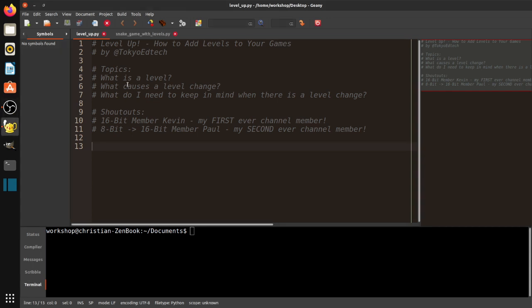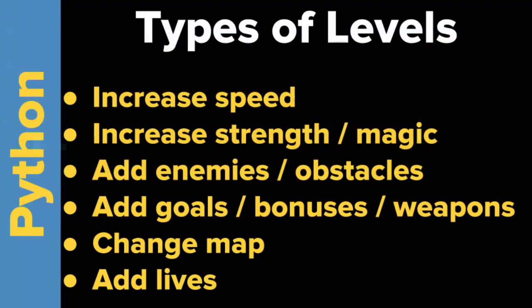People often ask me on my channel how to add levels, and I think the first question they have to answer for themselves is: what do you mean by a level? Here are some different level types. For example, in a level you might increase the speed of your player, increase the speed of the game, increase your strength, increase your magic, or the power of your weapons. You could also add more enemies or more obstacles.